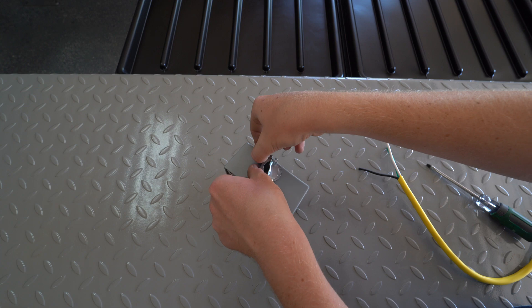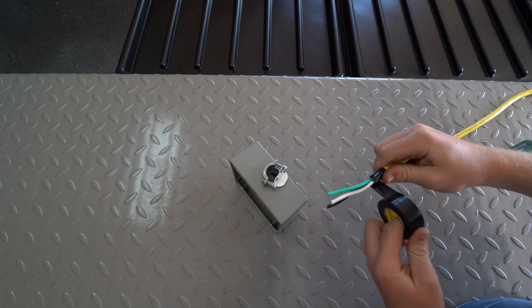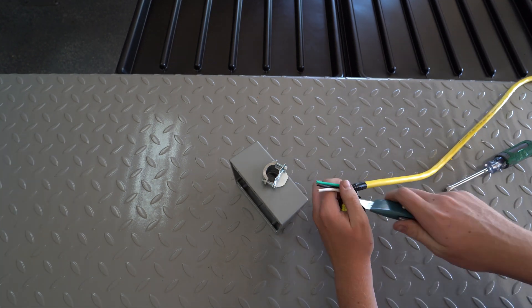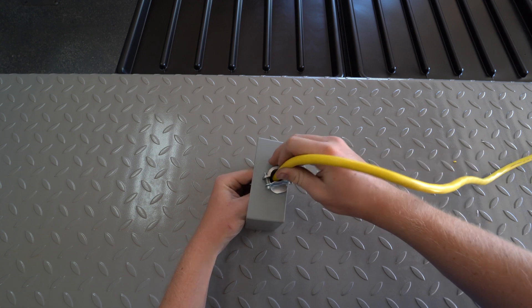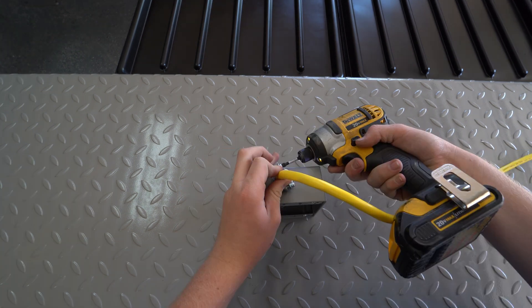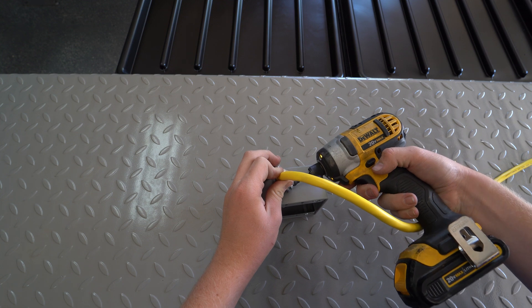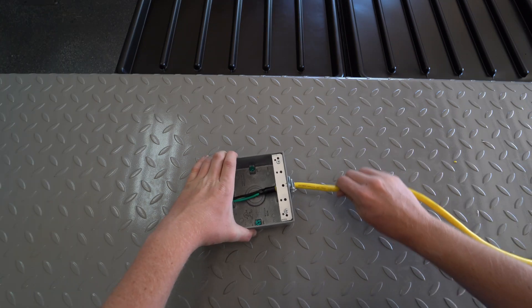Loosen the two Phillips head screws on the clamp. Wrap the end of insulation with electrical tape so it doesn't come loose. Pull a few inches of the extension cord through the clamp and then tighten the two screws. Give it a tug to make sure it's tight.